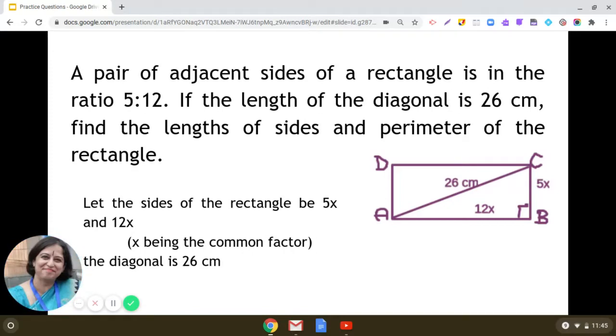Let us discuss this question from the chapter linear equations in one variable. A pair of adjacent sides of a rectangle is in the ratio 5 is to 12. If the length of the diagonal is 26 cm,